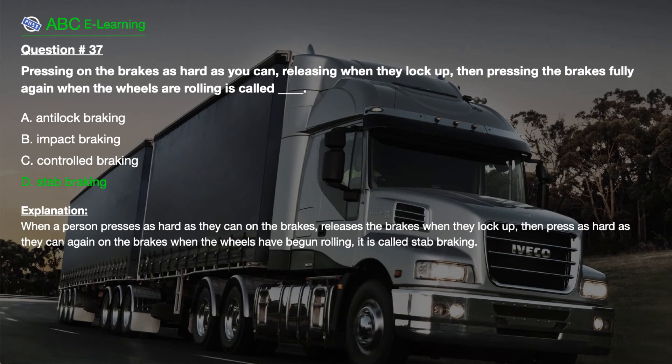Explanation: When a person presses as hard as they can on the brakes, releases the brakes when they lock up, then presses as hard as they can again on the brakes when the wheels have begun rolling, it is called stab braking.